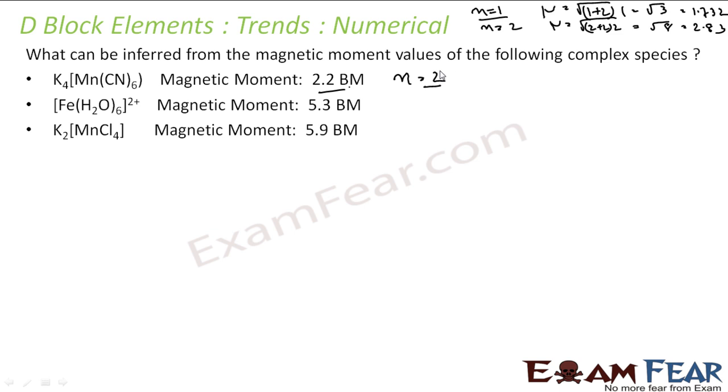Actually, is 2.2 more near to 2.83 or 1.732? I will say it is more near to 1.732, so n equals 1. You should take the lower values because this is only because of spin angular momentum, not orbital angular momentum. So n equals 1.